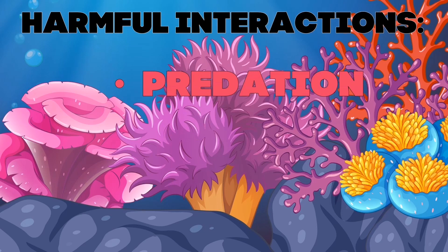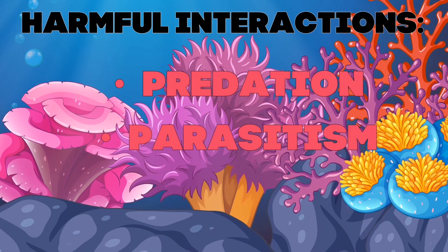The one that usually benefits is called the predator, and the one that is harmed is called the prey. If the number of prey is large, the number of predators increases since there is more food for predators. Next is parasitism — this type of interaction where the organisms that benefit are called parasites and the one that is affected is called the host. Parasites cannot live alone; they must live in a living host.